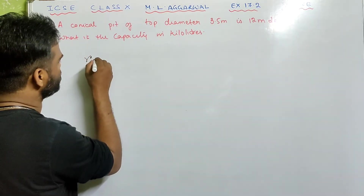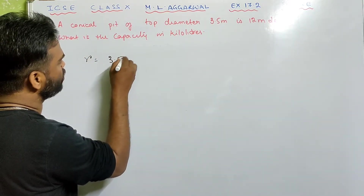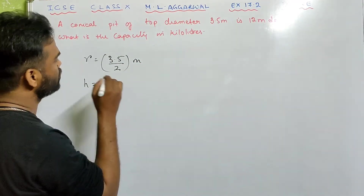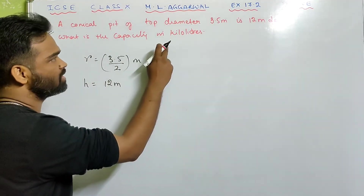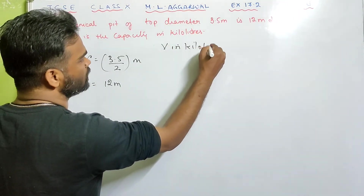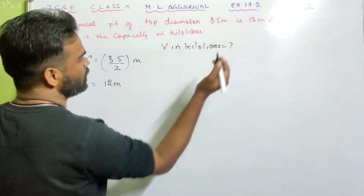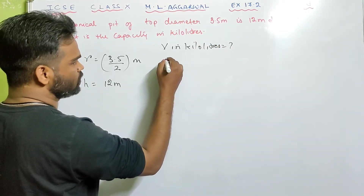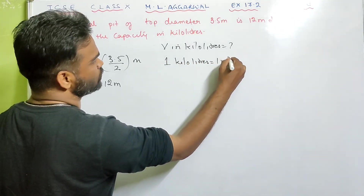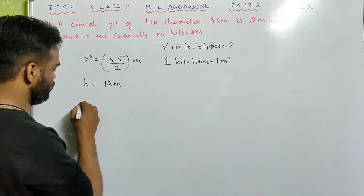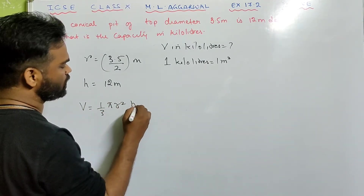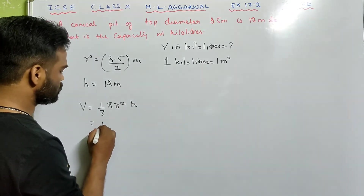Sum 7: A conical pit of top diameter 3.5 meter is 12 meter deep. The radius will be half of the diameter, and the height is 12 meter. They are asking for the capacity in kilolitres, which means volume in kilolitres. One important thing to remember: one kilolitre is equal to one meter cube.